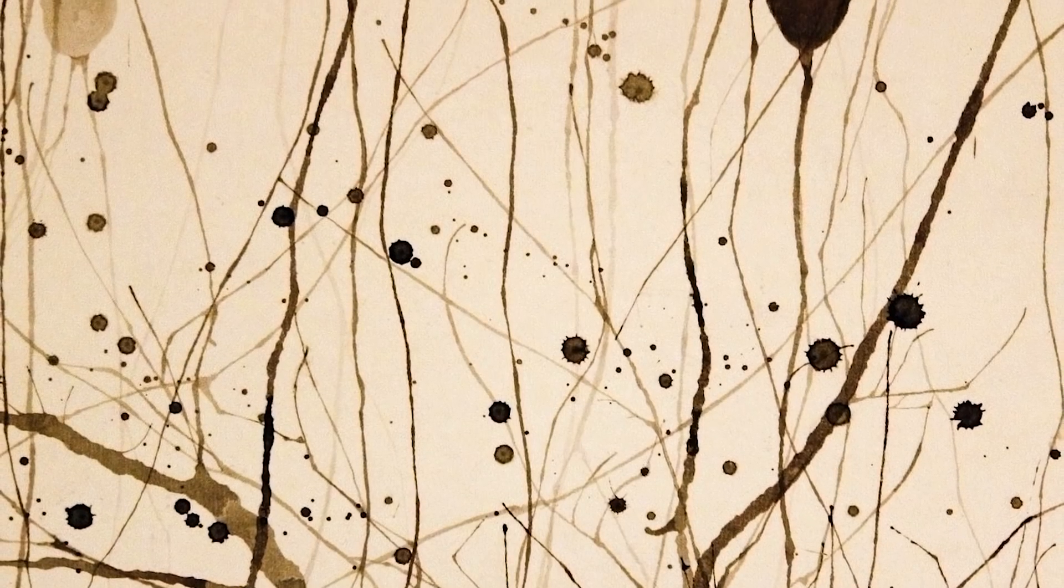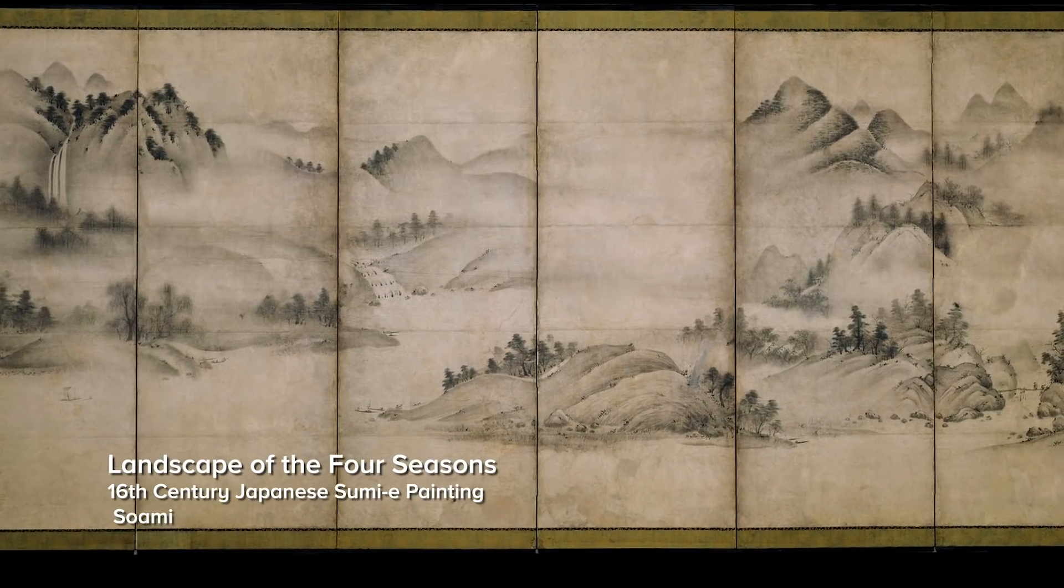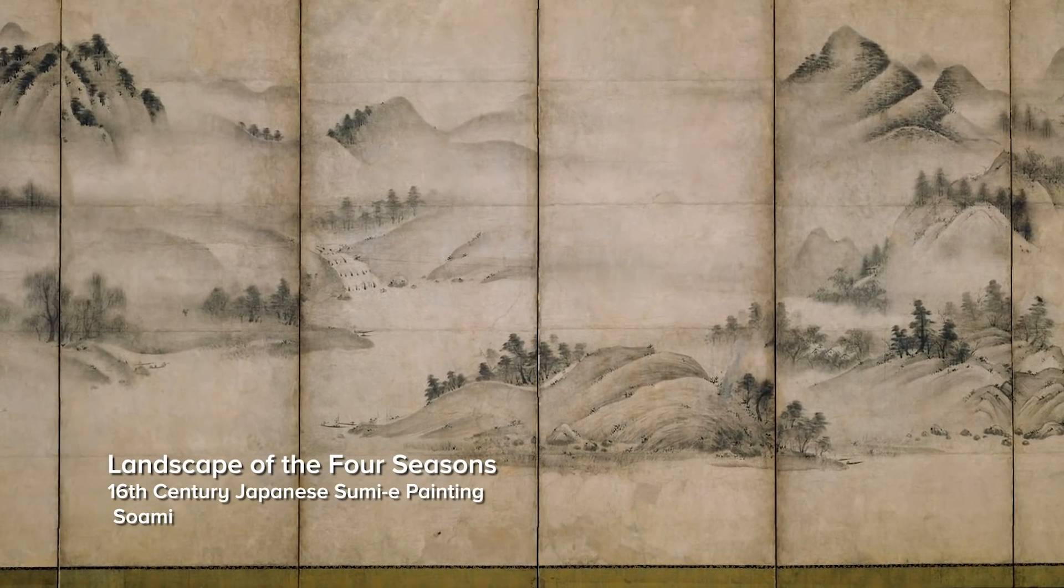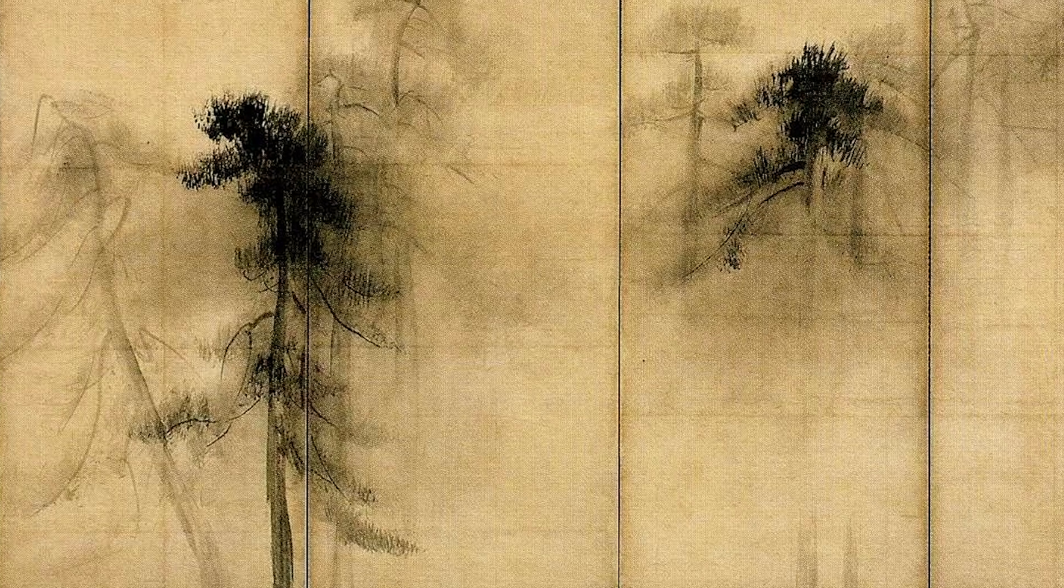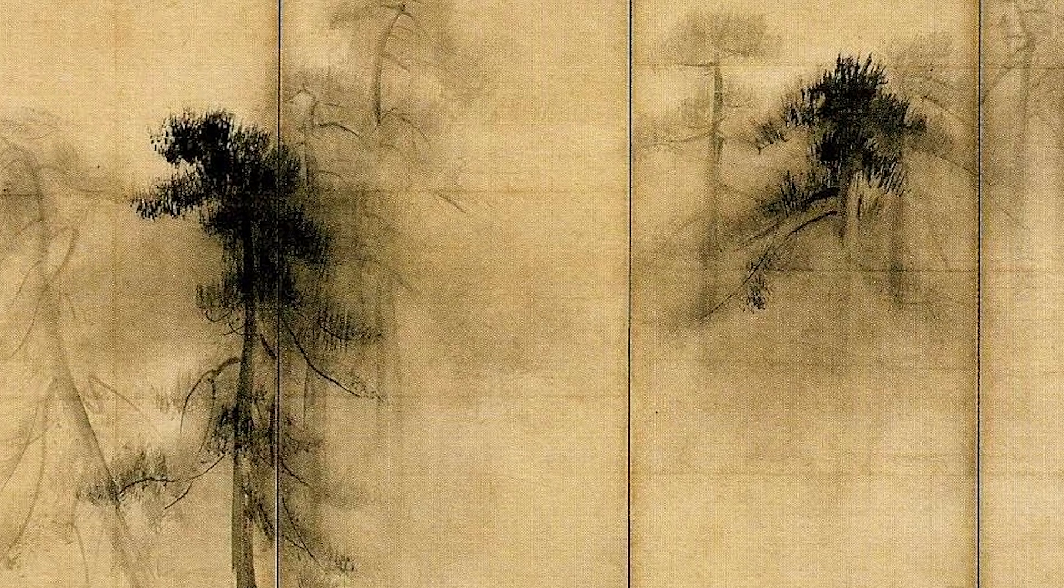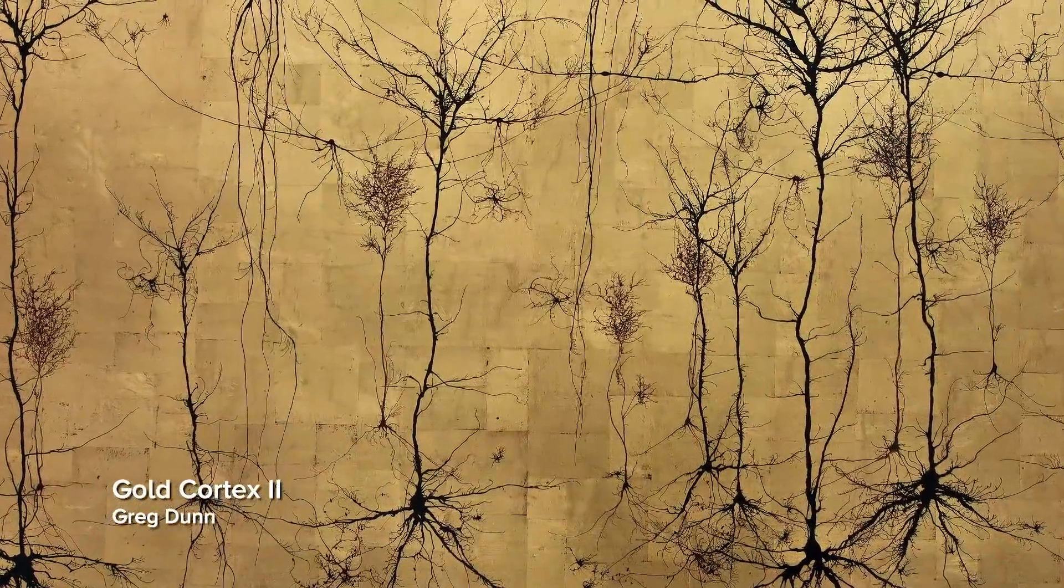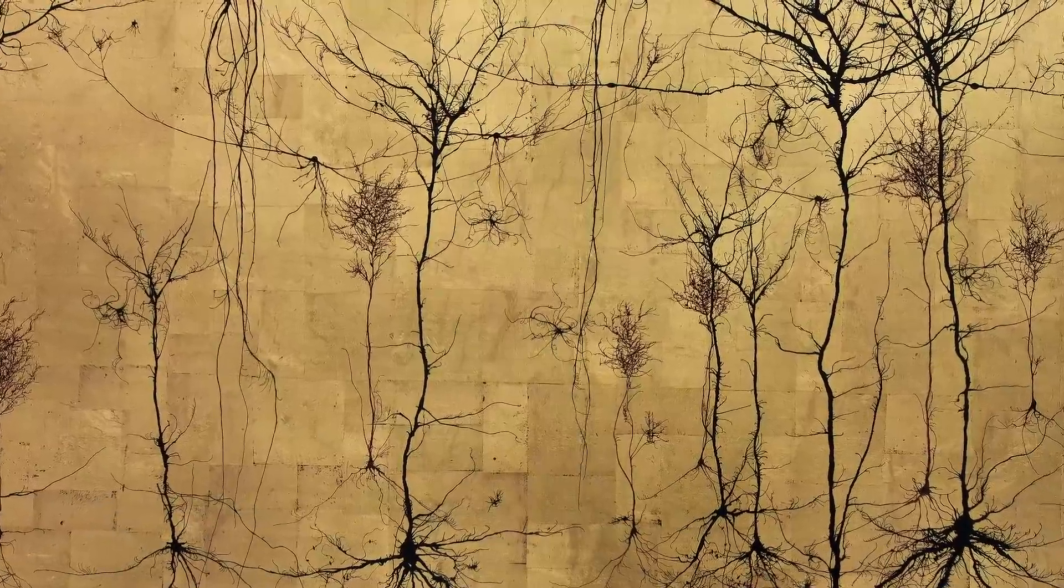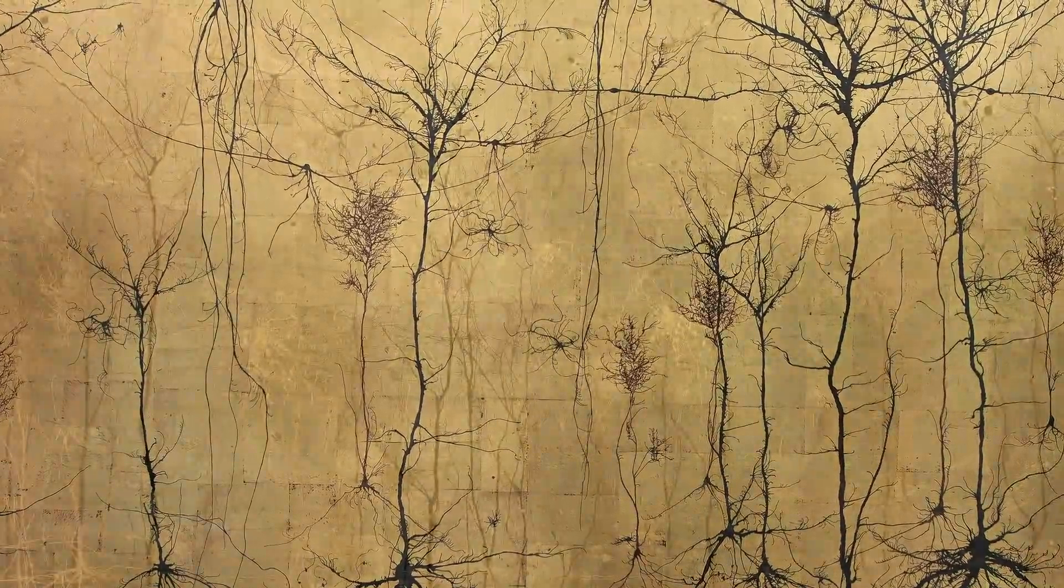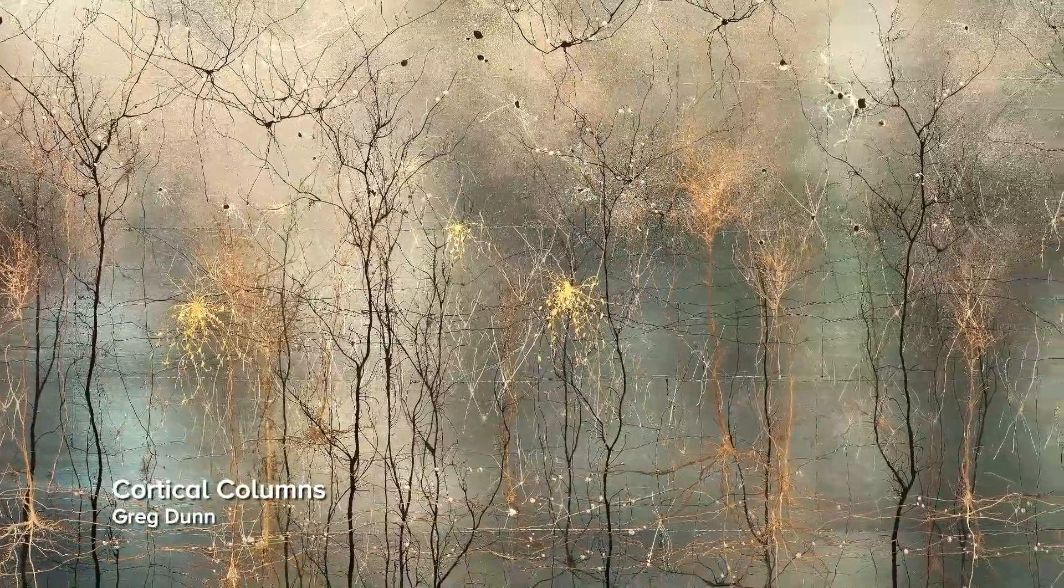I started doing work in a sumi-e type of style, Japanese and Chinese ink painting. I wanted to draw parallels between the classical subjects of Asian art and the world of neurons and neuroscience because I think the subject material is essentially the same thing. The only difference between a landscape of a forest and a landscape of the brain is that you need a microscope to see one but not the other. It's really a reflection of the artist's mind.